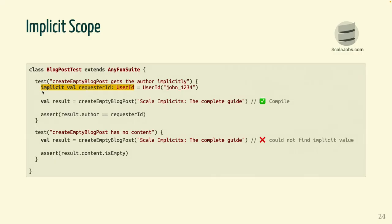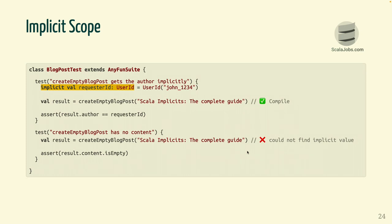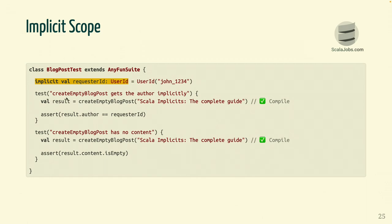Another important thing to know is that implicits are scoped — they're not globally available. For example, with two unit tests for create empty blog post: if the implicit is defined within the first test but not the second, the first test passes because the implicit is visible from the first call, but in the second test the compiler says it can't find the implicit value. The rule of thumb: if you were able to reach out to this value by typing it, the compiler will be able to use it. So to fix the issue, we need to move the implicit outside of the unit tests, where it will be available for both.